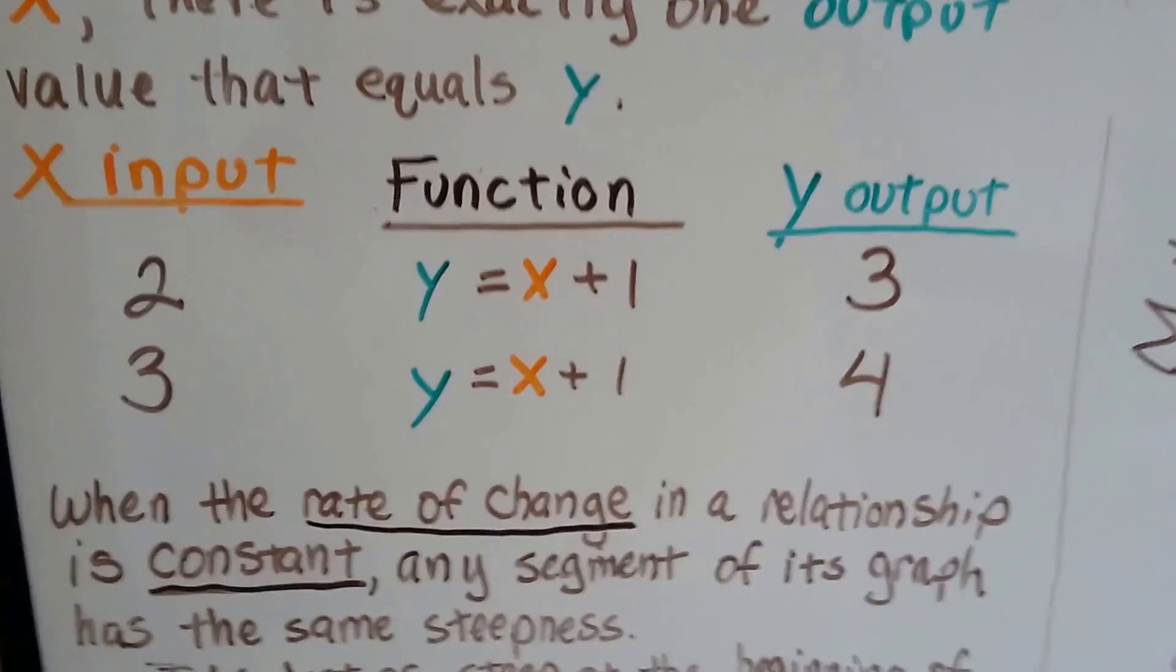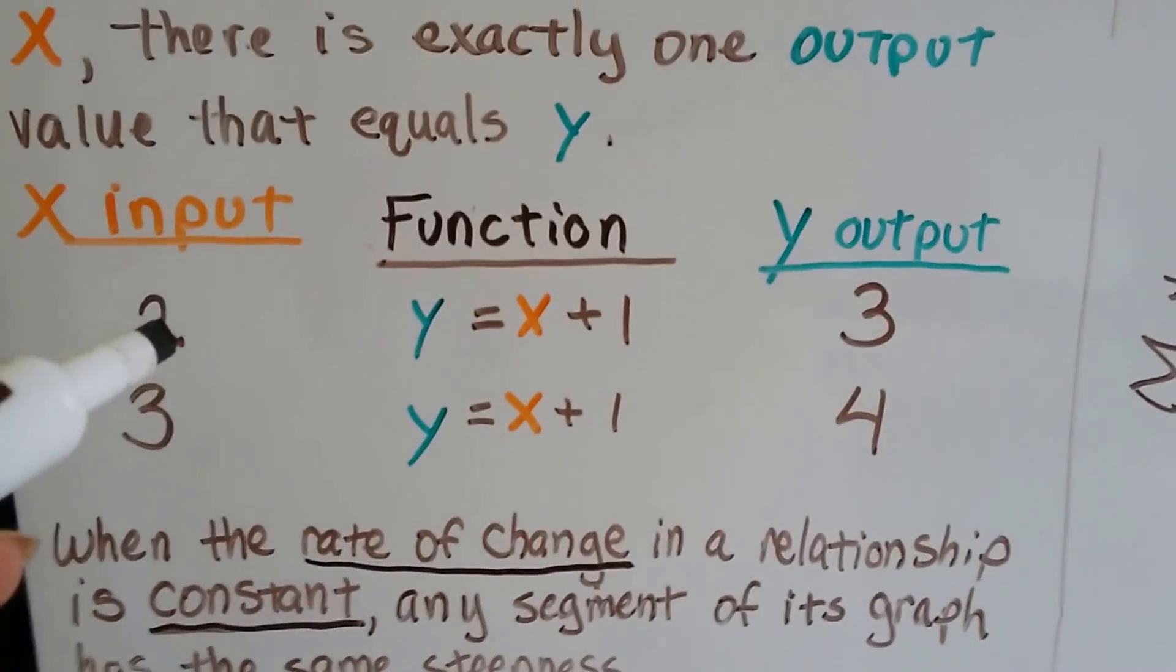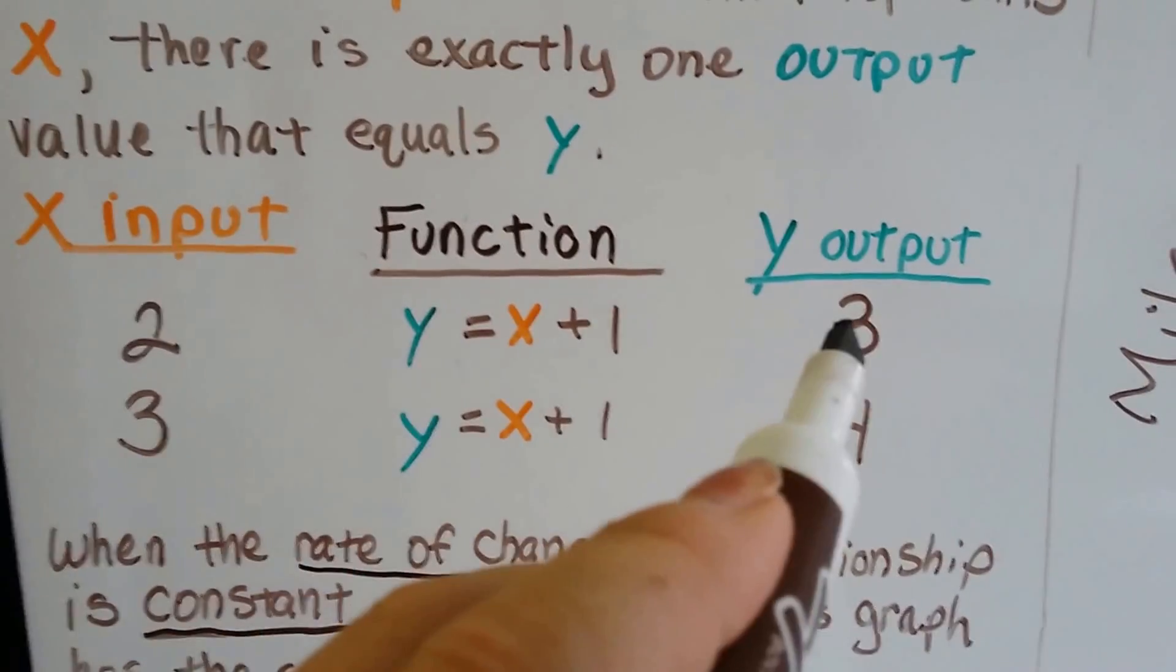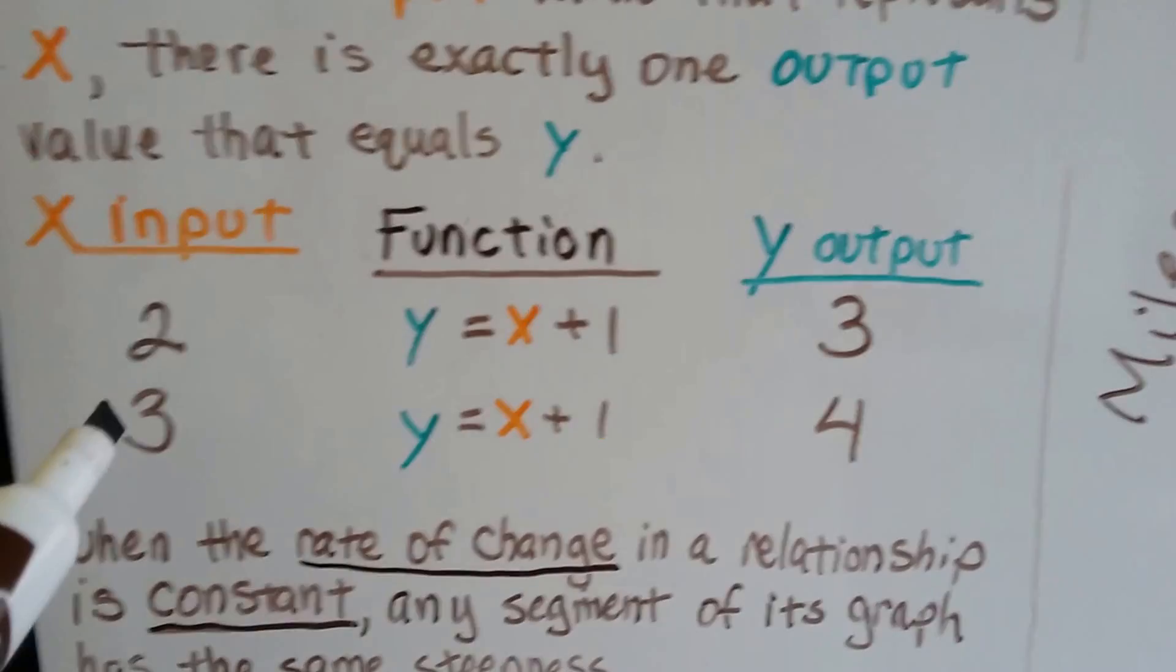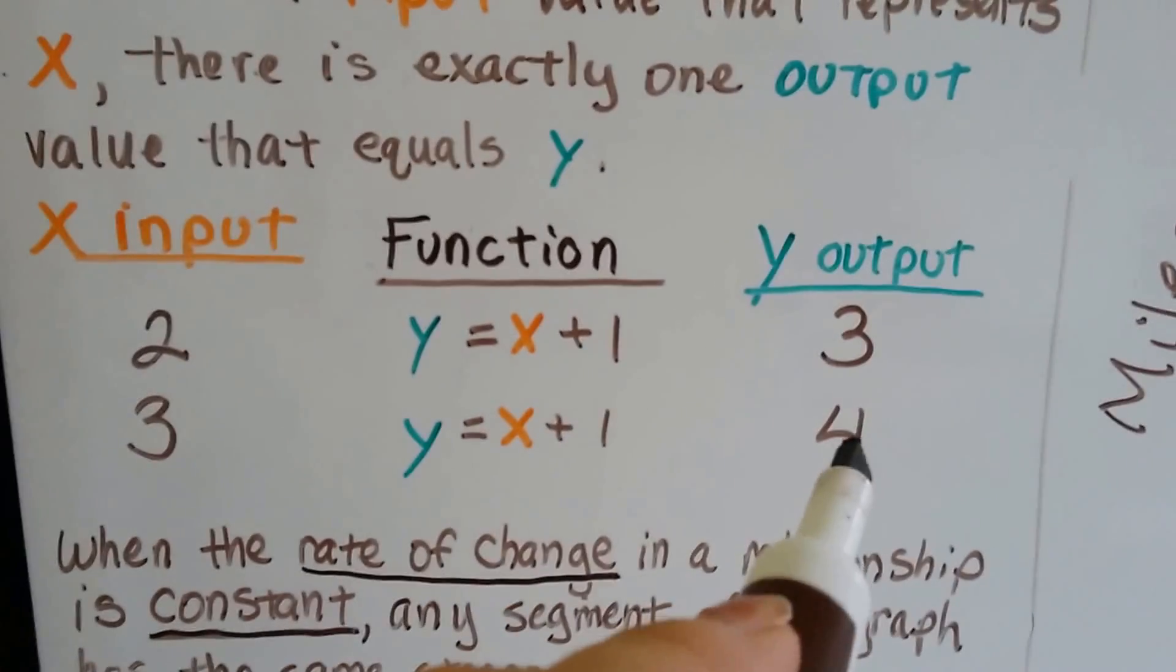So in our function, if it was x plus 1, if we input a 2, we'll have 2 plus 1, our output's going to be a 3. And if our input x is going to be a 3, 3 plus 1 is 4, our output's 4.